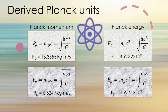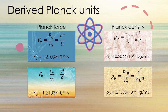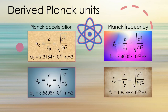Here we have Planck momentum and Planck energy — original units on top, modern units on the bottom — both differing by the square root of 2π. For Planck force and Planck density, Planck force is identical in both cases because Planck's constant does not factor into it, while the original differs from the modern by dividing by 2π for density. For Planck acceleration and Planck frequency, both differ by dividing the modern version by the square root of 2π.